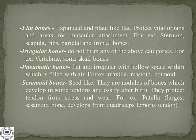Irregular bones are classified as such because they do not fit into any of the above categories. Examples include the vertebrae and some of the skull bones. The name 'irregular' is given because they are very unique in shape — you cannot categorize the shape of these bones into any of the mentioned categories.